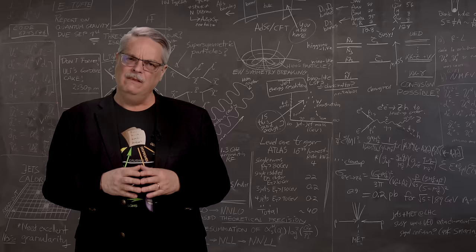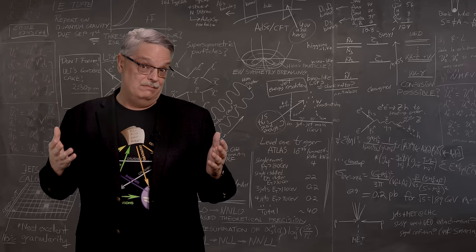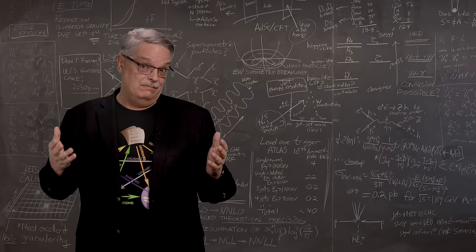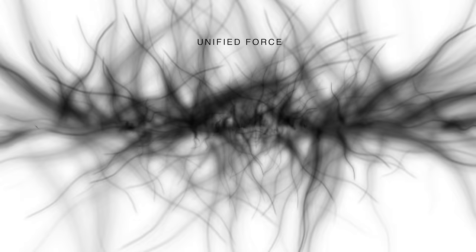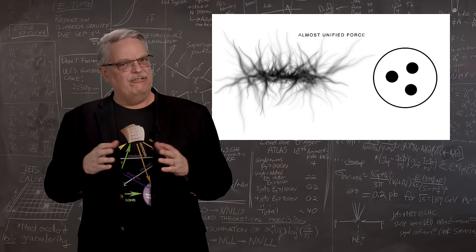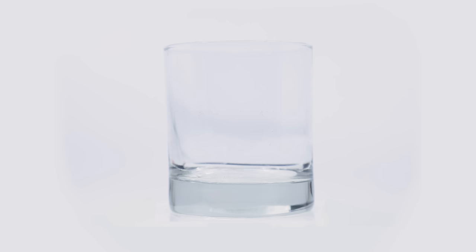If all forces were once the same and they act differently now, then there must have been a time at which they became different. And one idea is that the thing that gave the energy to cause the universe to expand is when the strong nuclear force became different from the others. That's called a phase transition, and it's a perfectly reasonable idea. In case that idea is confusing to you, here's an analogy.